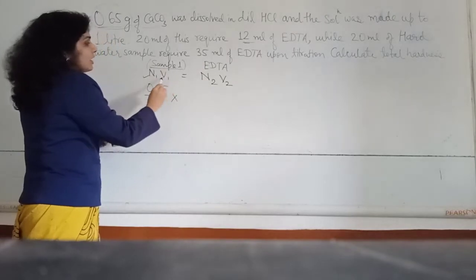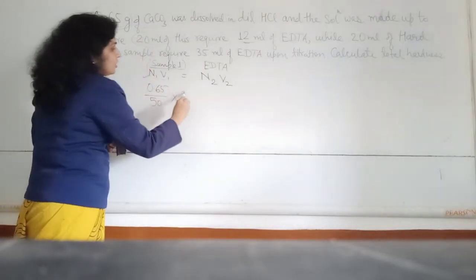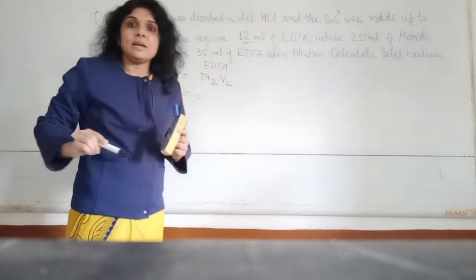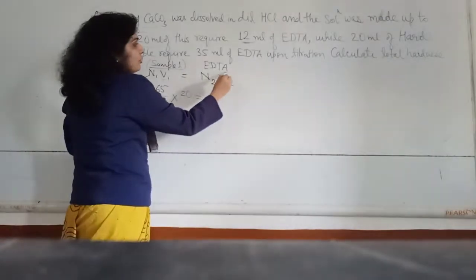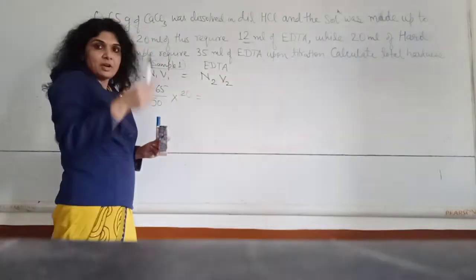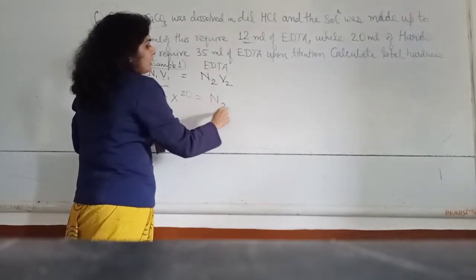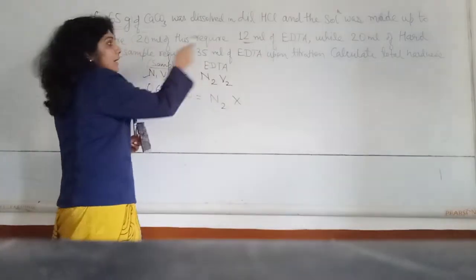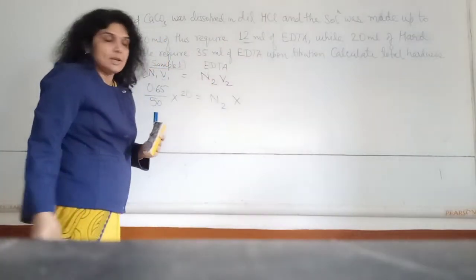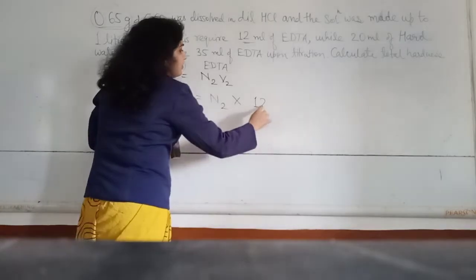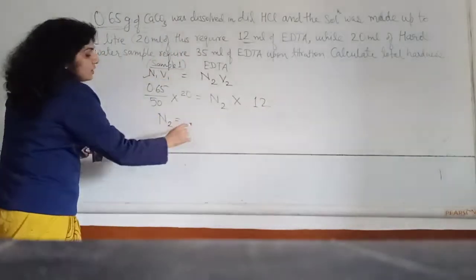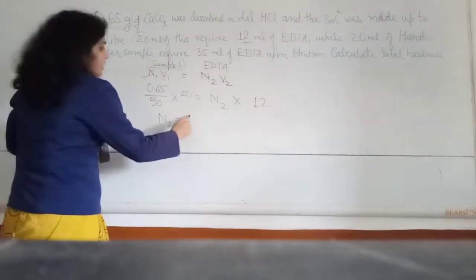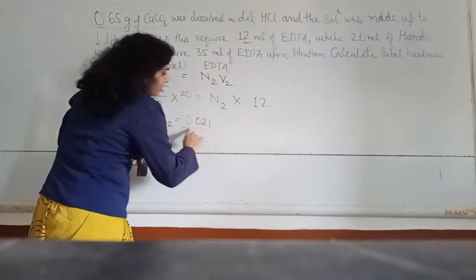The volume of Sample 1 is 20 ml. EDTA is in the burette and we need to find its normality. The end point volume of EDTA is 12 ml. When we solve using N1V1 = N2V2, the normality of EDTA comes out to be 0.021 N.